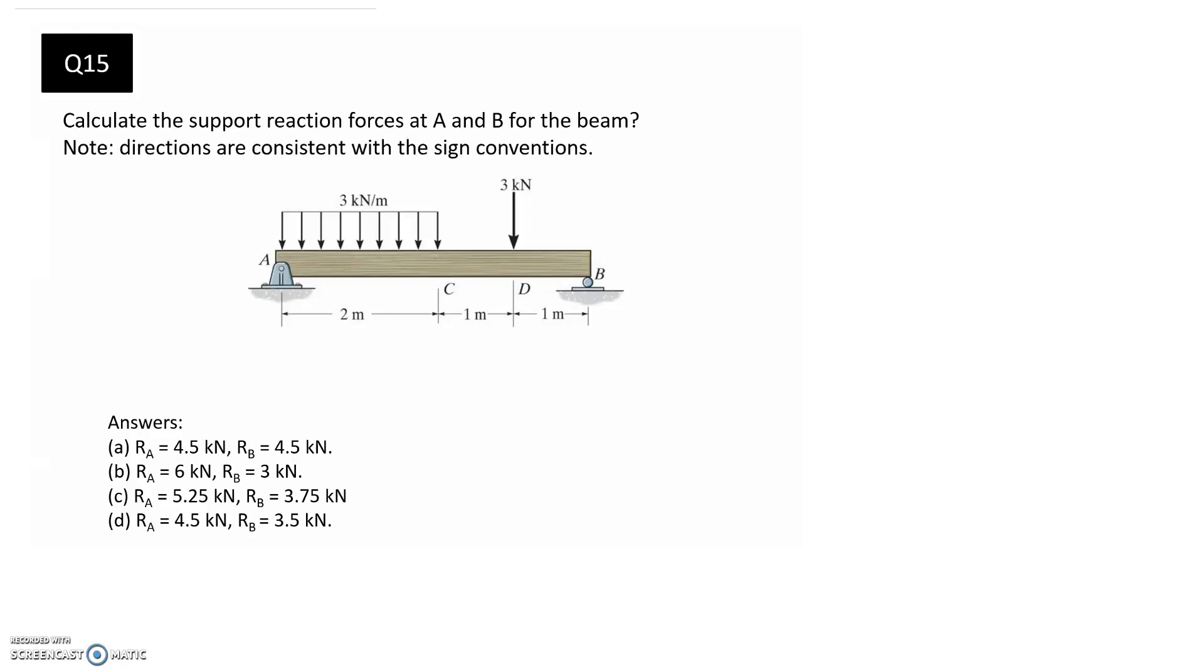I'm asked to calculate the support reactions at A and B for the beam, and note that the directions are consistent with the sign conventions. This is referring to the answers, so positive x and positive y direction are reflected in the signs here. The first step is to draw the free body diagram, and then we should be able to apply the equilibrium equations to find those unknown support reactions.